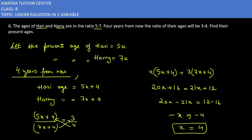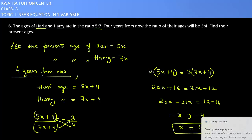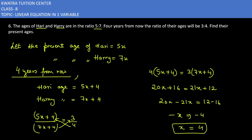And we have to find the present age of Hari and Hari. So it would be 5x into 4, which is 20, and 7x into 4, which is 28 years. That's the answer for the sixth one. Now we will be moving to the last part.